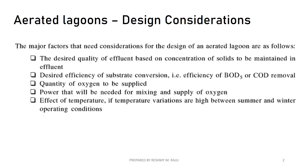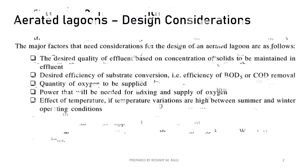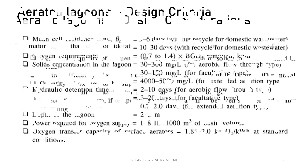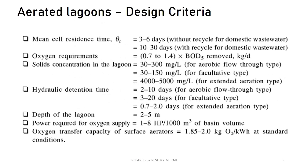We will also cover the oxygen supply chain, including mixing and power for the oxygen supply. That includes the effect of temperature variation and its change. We are going to examine the effect of design criteria on ASP.